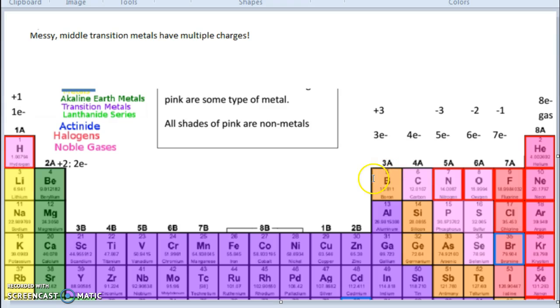And then we skip the messy middle transition metals. Group 3 has 3 valence electrons. Group 4 has 4. Group 5 has 5 valence electrons, 6 valence electrons for group 6, 7 for group 7, and 8 valence electrons for group 8, of course except helium because it's so tiny it only has 2, but it has a full outer shell and therefore it is a noble gas that will not react.